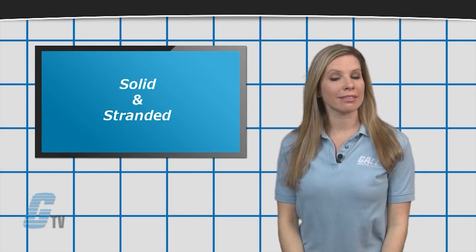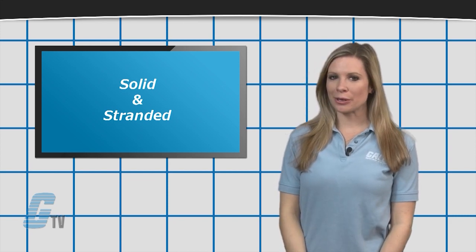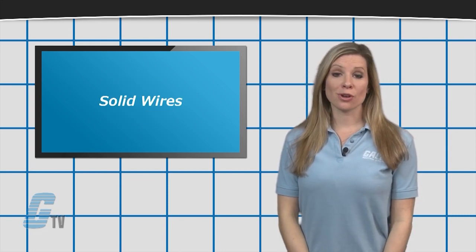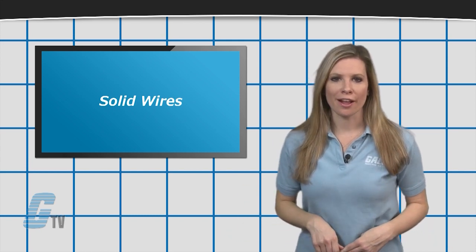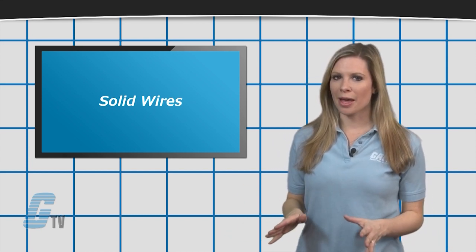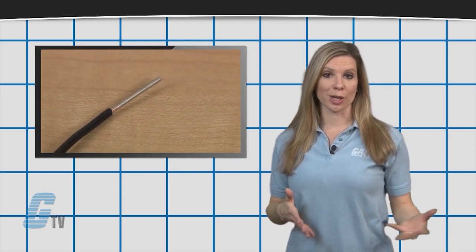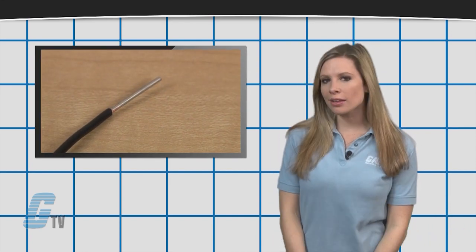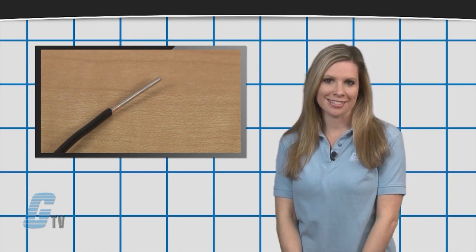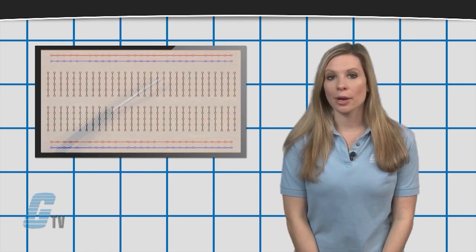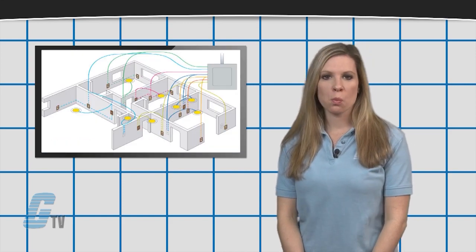Two types of wires used in electrical applications are solid and stranded wires. Solid wires are often referred to as solid core wire and are a single piece of metal wire. They are generally cheaper than stranded wire and can provide a rugged connection due to its rigid characteristics. It can be used in wiring breadboards and also in residential wiring.